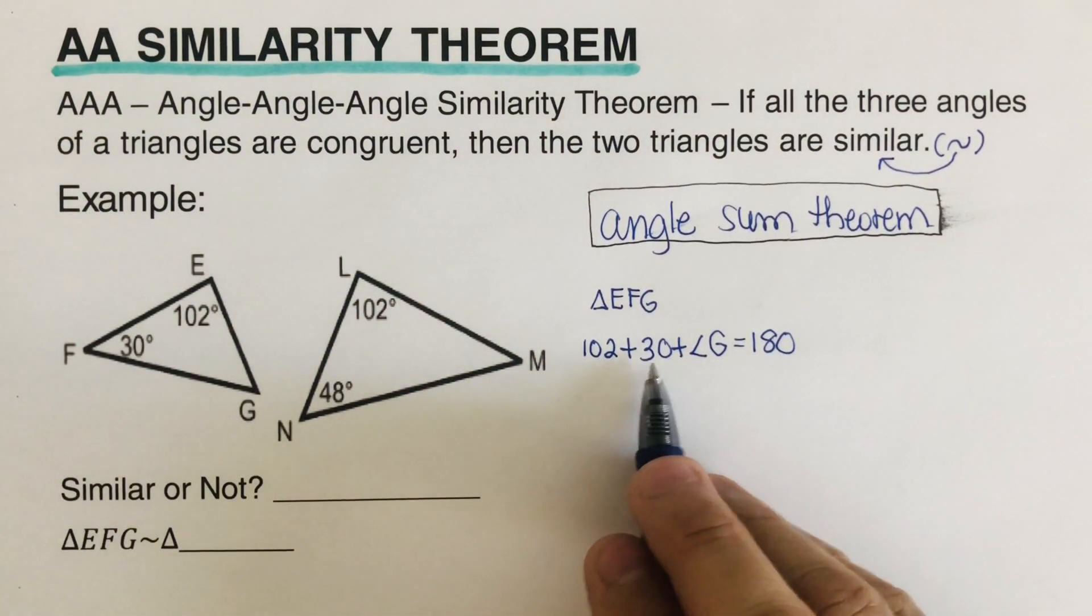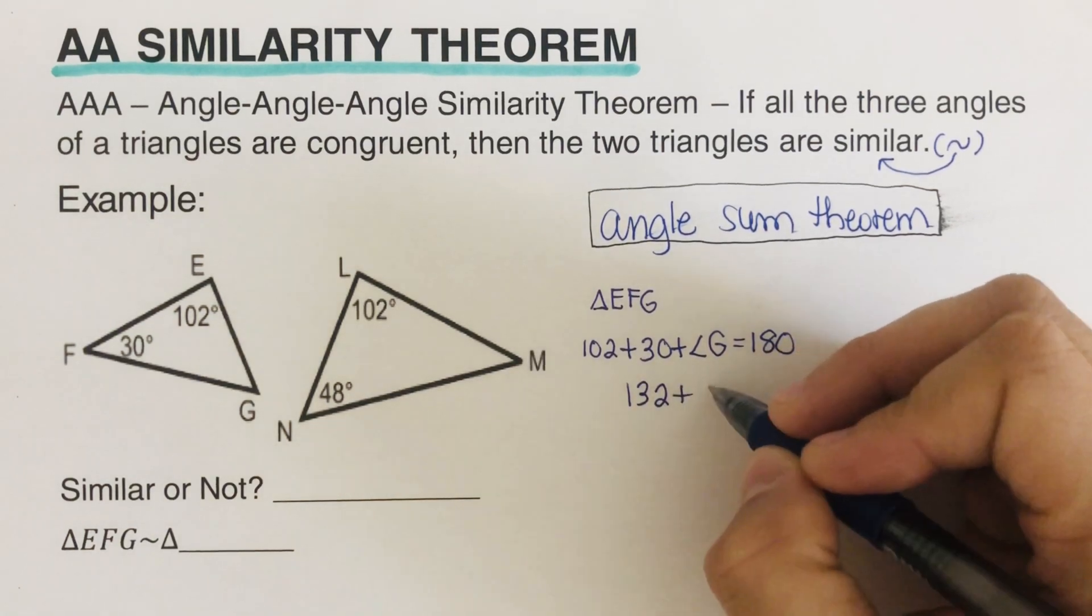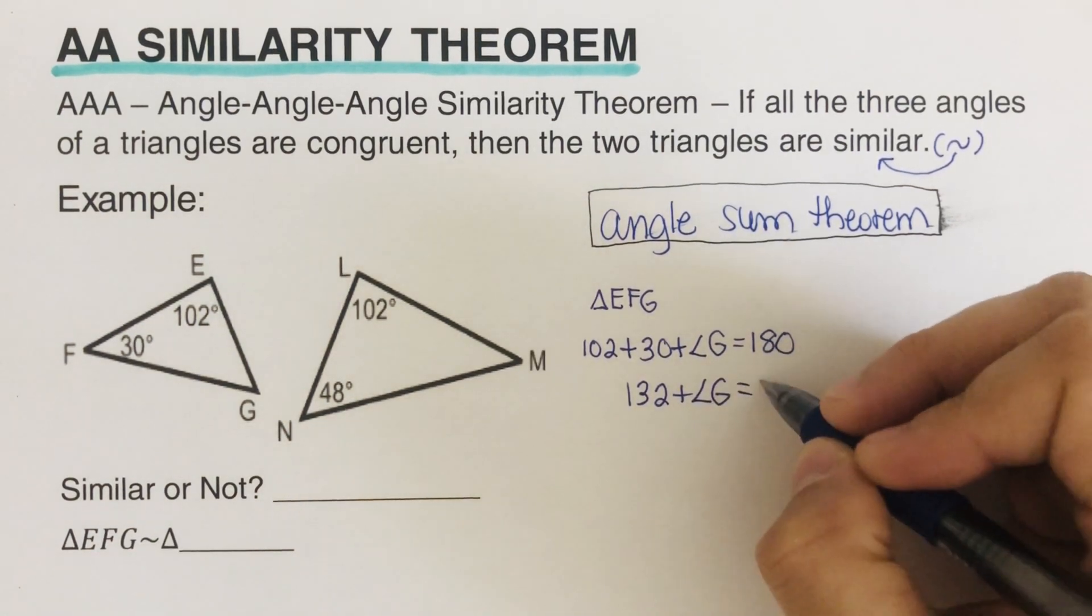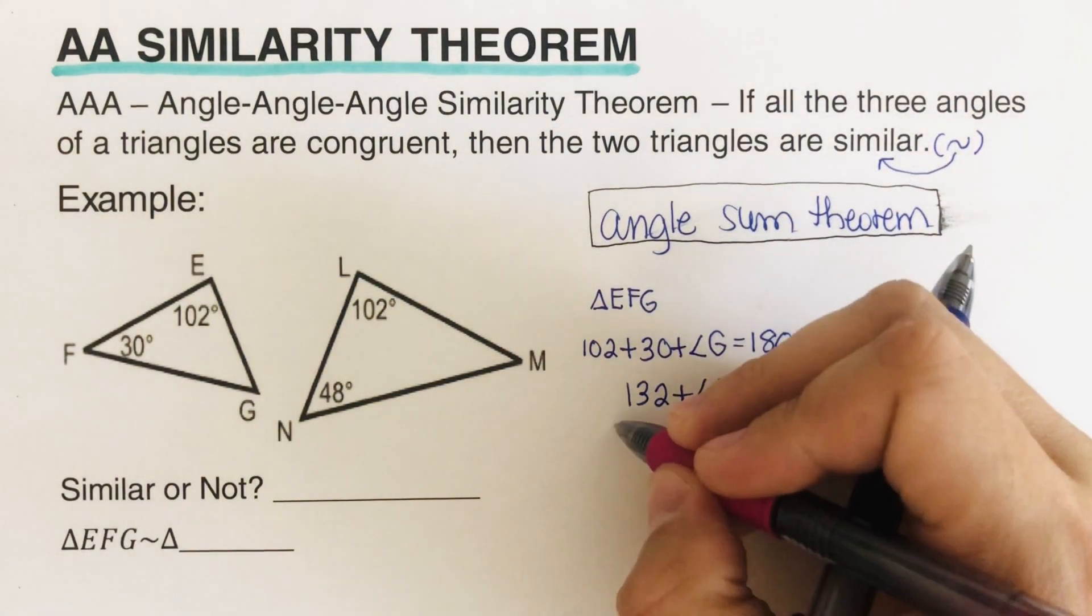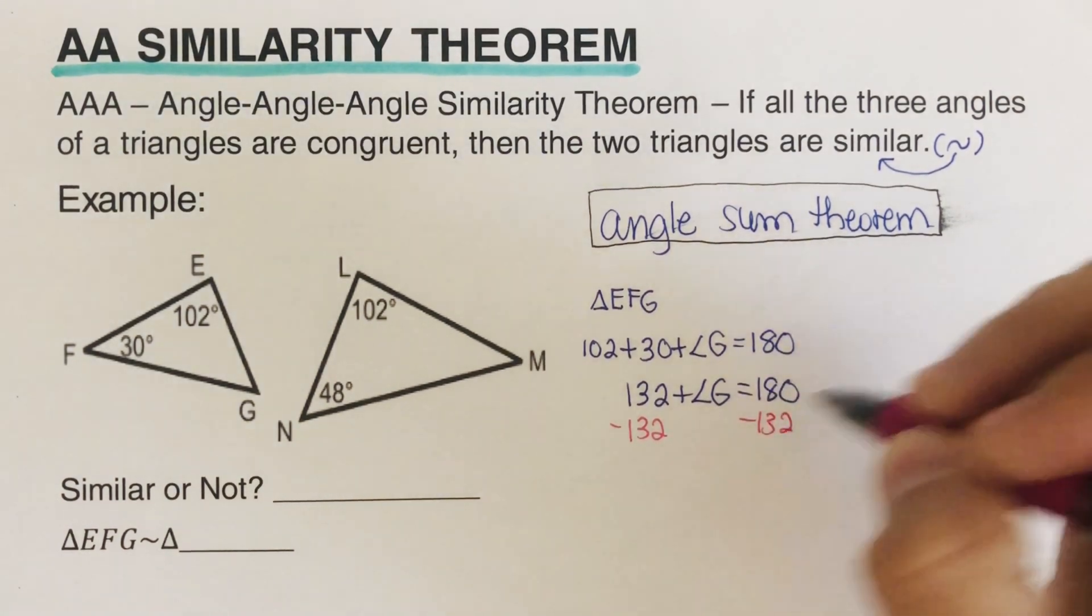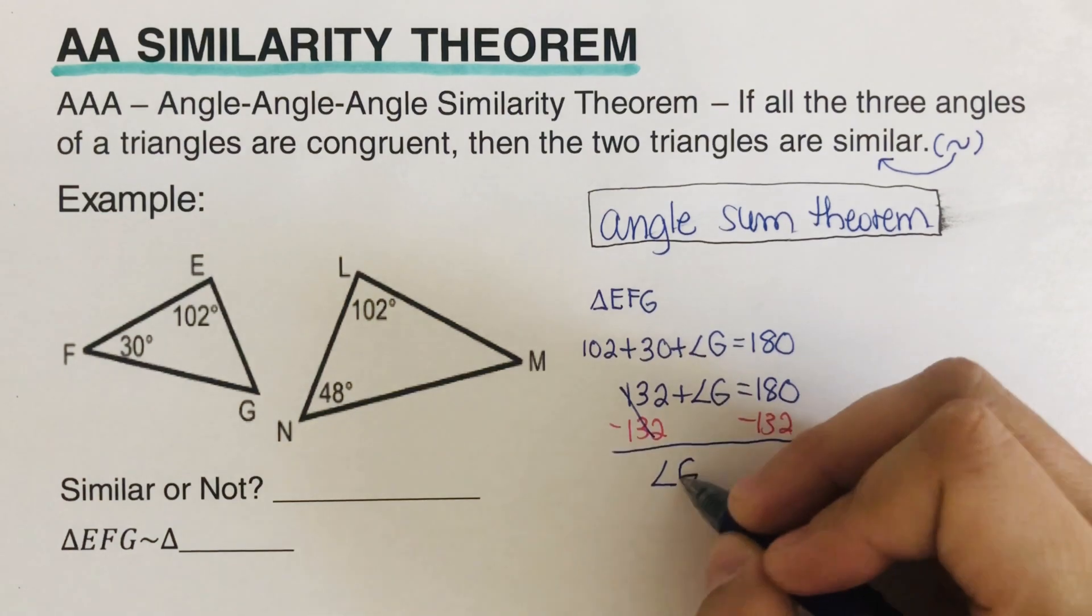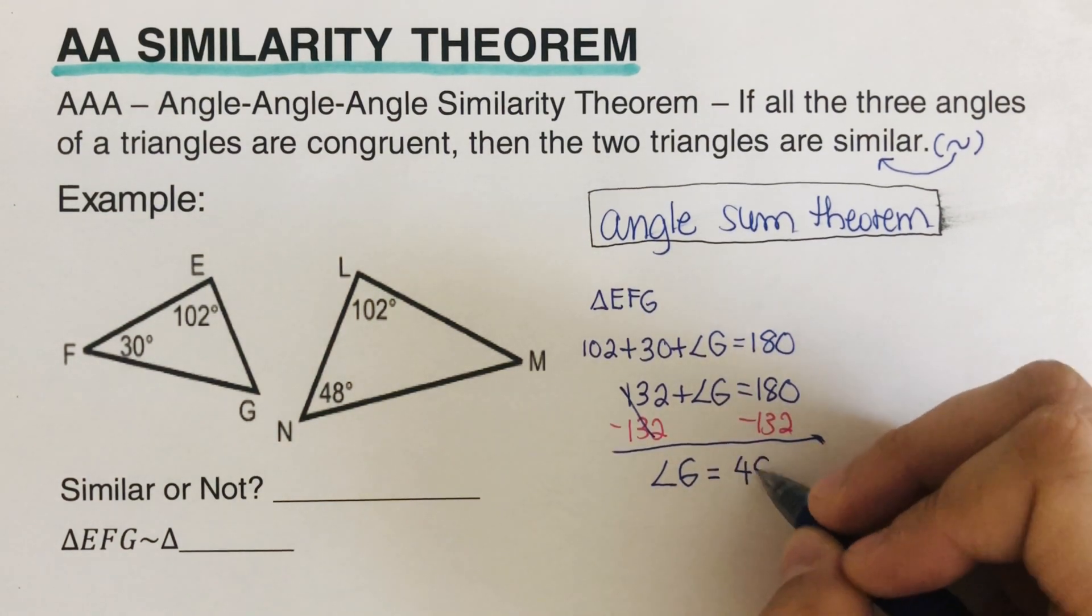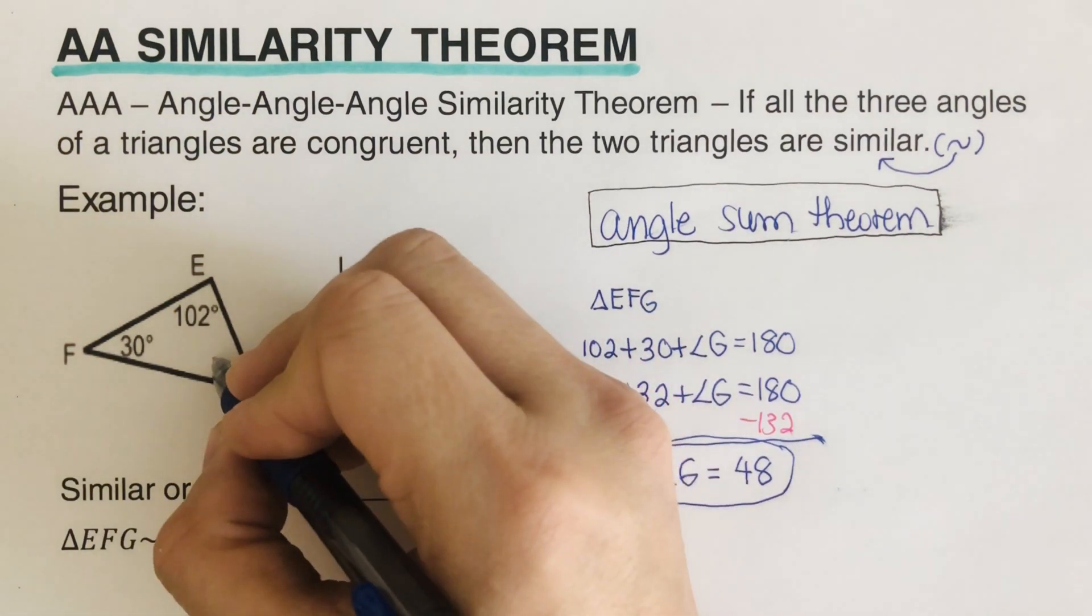And so 102 plus 30 is 132. So we have 132 plus angle G is equal to 180. We subtract both sides by 132. So minus 132 minus 132 right here. So we are left with angle G is equal to 48. So this angle right here is 48.